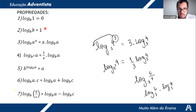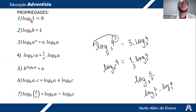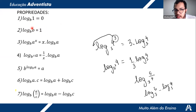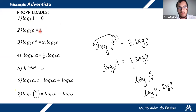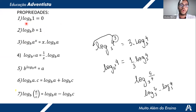A second property: log of b base b equals 1, meaning when the logarithm equals the base, the result is 1. Why? Because b raised to 1 is b — 2 to the 1 is 2, 5 to the 1 is 5. So log of 8 base 8 is 1, log of 10 base 10 is 1, log of 1000 base 1000 is 1. Always.